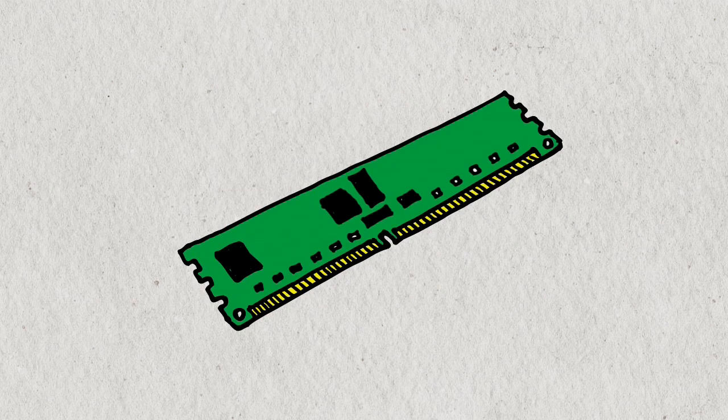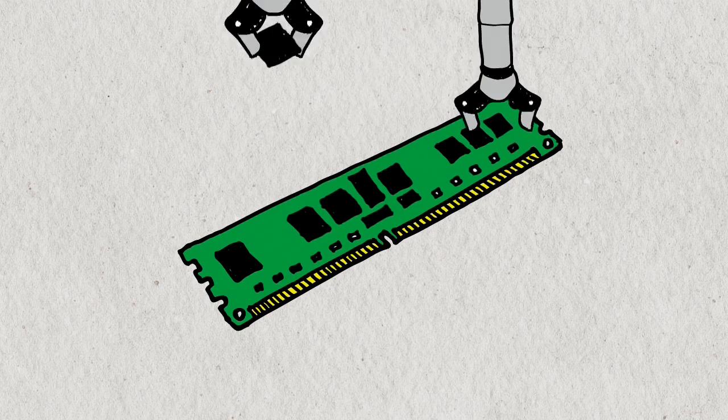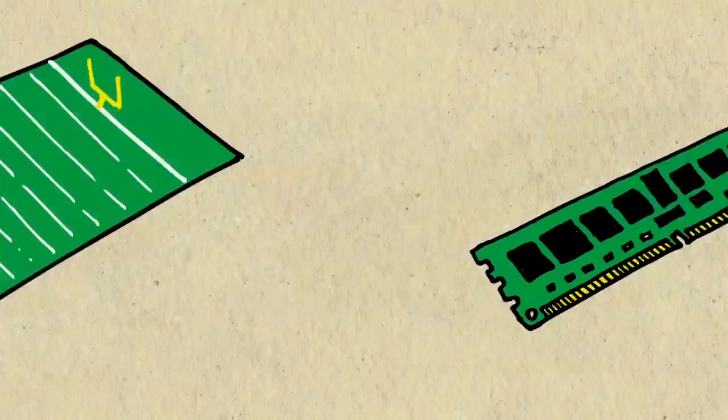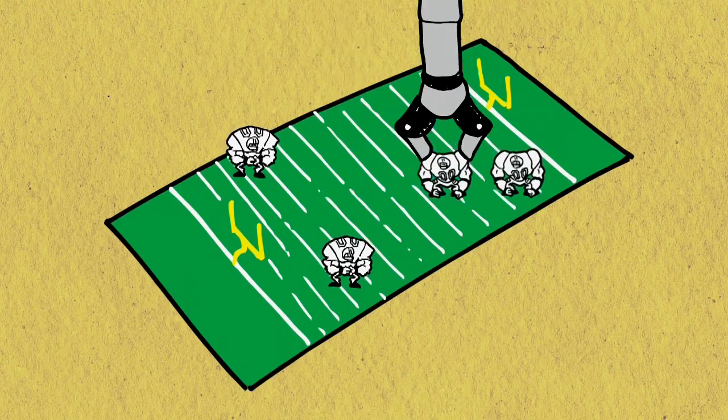The board then travels to the surface mount device, where memory chips are placed into position on the solder paste. In our football analogy, the players take the field.